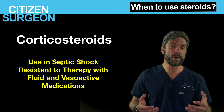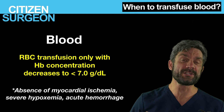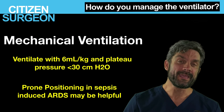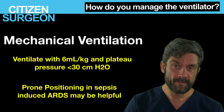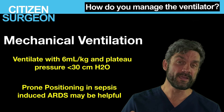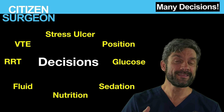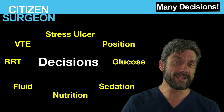A few other important concepts: corticosteroids can be used in septic shock resistant to fluids and vasoactive medications. Blood transfusion is generally not needed until hemoglobin falls below seven. For mechanical ventilation, to avoid lung injury, ventilate with tidal volumes around 6 mL/kg and a plateau pressure less than 30 cmH₂O; prone positioning can also be helpful as seen in COVID-related sepsis. Additional considerations include VTE prophylaxis, glucose control, stress ulcer prevention, nutrition, and patient positioning — all addressed in the Surviving Sepsis Guidelines.